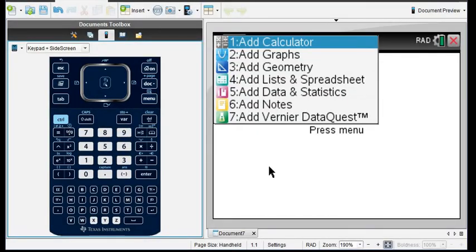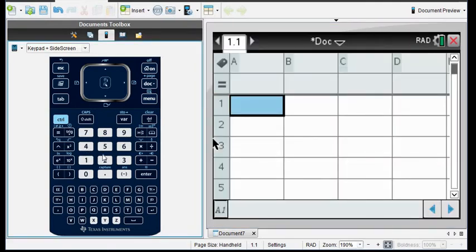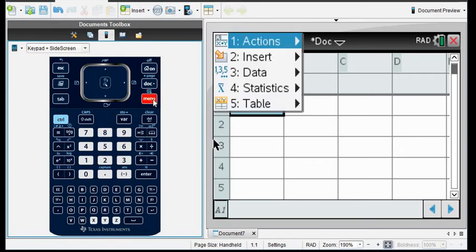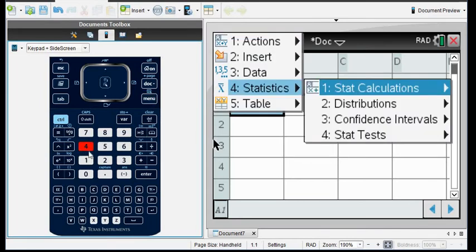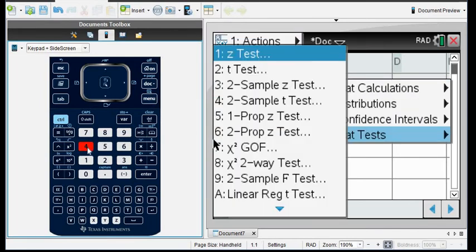Typically, if you're just running the test and you want to get your p-value and all of your important information, you would add a calculator. But this time, I want to draw it, so to draw it, I have to choose option four, add lists and spreadsheet. And then I'm going to go to menu and statistics, and I'm going to choose option four, stat tests.